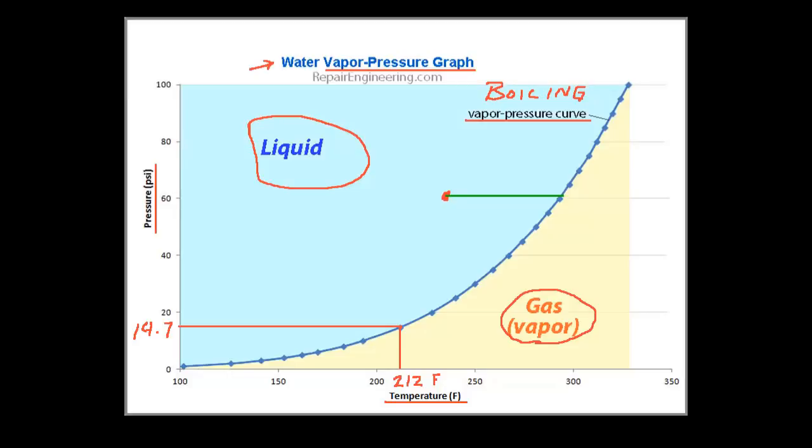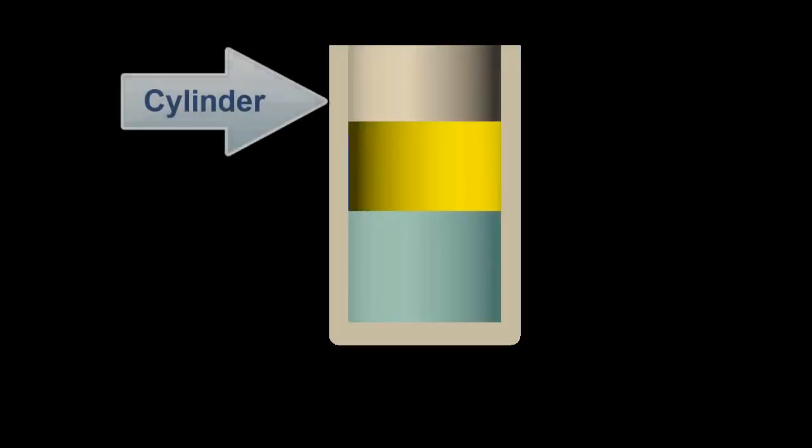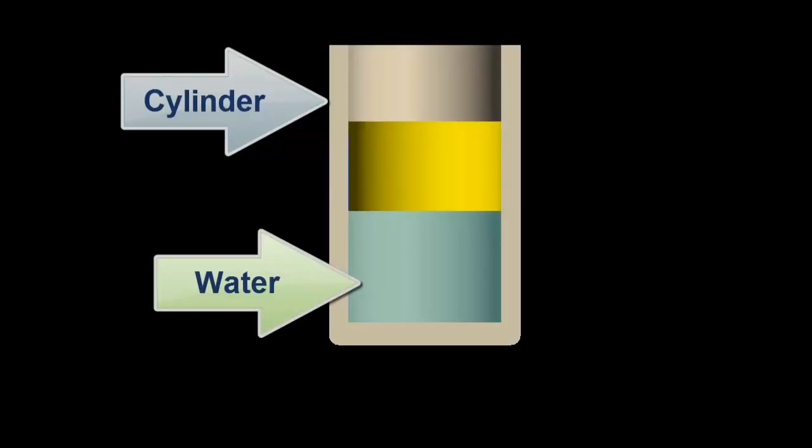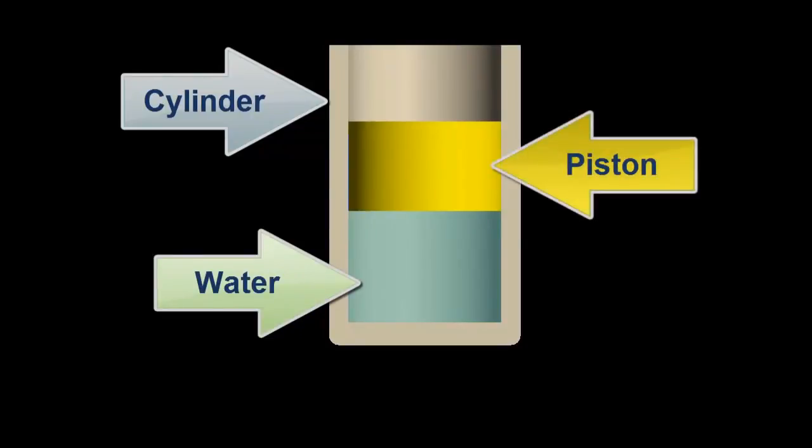Here is a short animation that visually illustrates this process. In this animation, this part represents a cylinder, and it is partially filled with water, shown here. This represents a piston. Imagine that the piston is tightly fitted to the cylinder so that there are no leaks in the system.